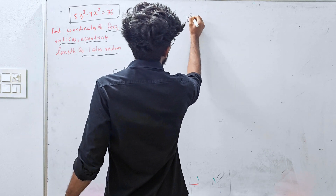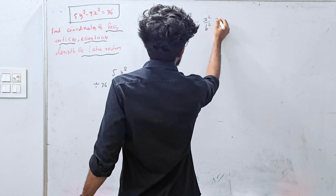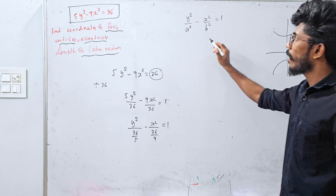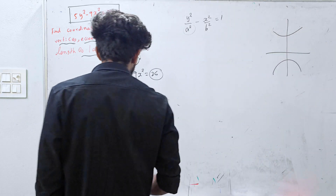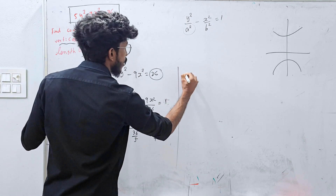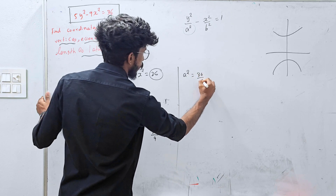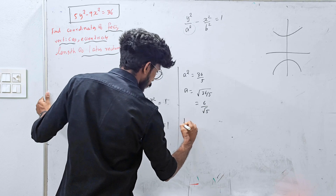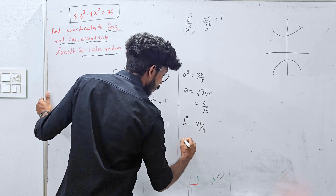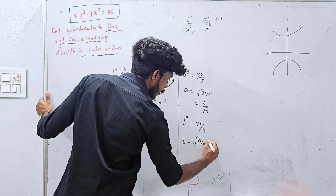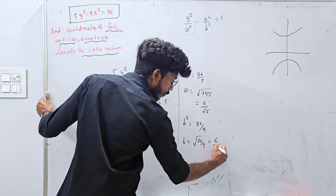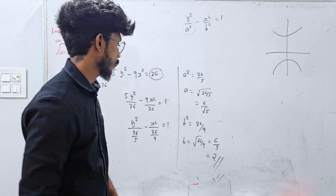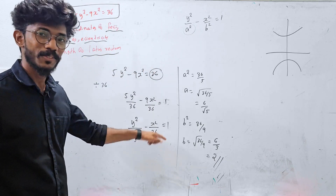The equation is y²/a² minus x²/b² equal to 1. This is a transverse hyperbola along the y-axis. So a² = 36/5, and a = 6/√5. B² = 36/9 = 4, so b = 2. Clear? 6/3 is 2, and 2 squared is 4.